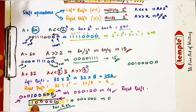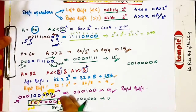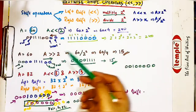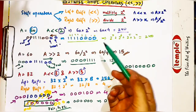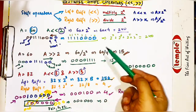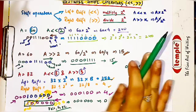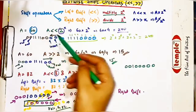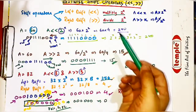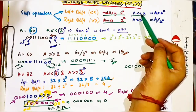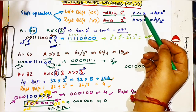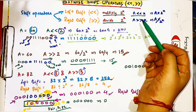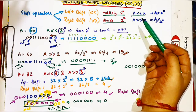Since 256 cannot be represented in 8 bits, you must write 32 as a 16-bit binary number for the shifting method to work correctly. This was explained to show why bits overflow during shifting. For exam purposes — especially for GATE — focus mainly on the trick: for left shift, multiply the number by 2^x; for right shift, divide by 2^x.